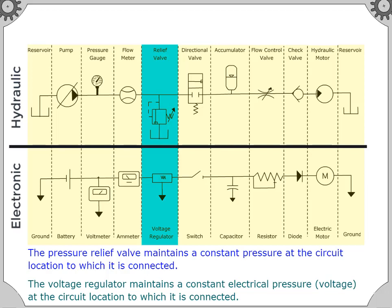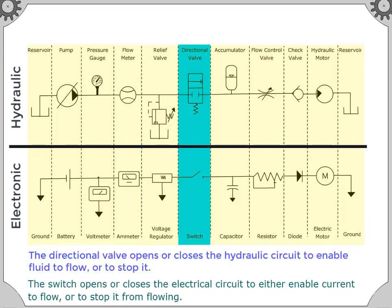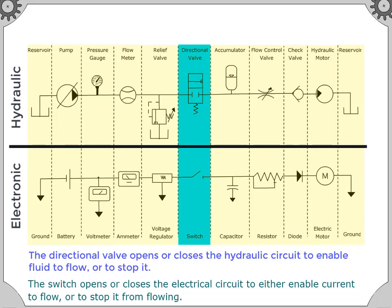The pressure relief valve maintains a constant pressure at the circuit location to which it is connected. The voltage regulator maintains a constant electrical pressure or voltage at the circuit location to which it is connected. The directional valve opens or closes the hydraulic circuit to enable fluid to flow or to stop it. The switch opens or closes the electrical circuit to either enable current to flow or to stop it from flowing.